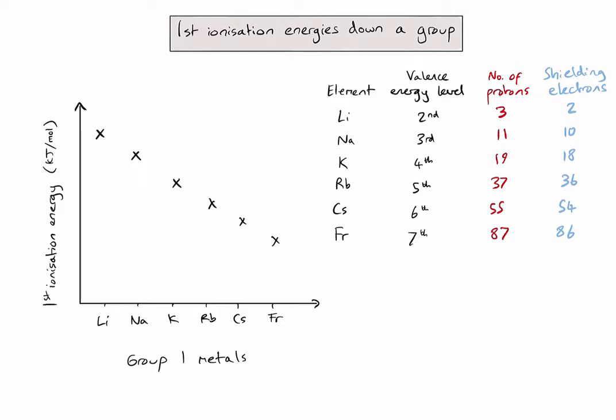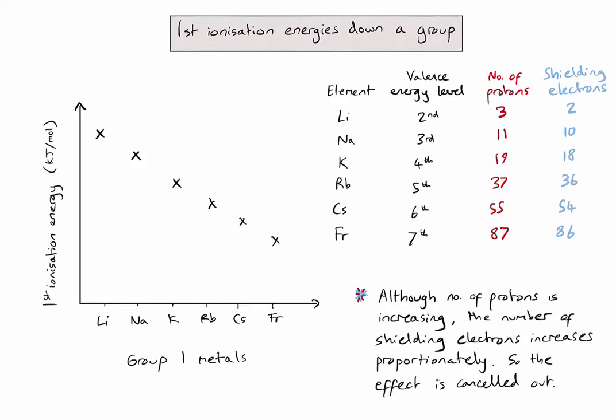So to explain the first ionisation energy decreasing down a group, we're interested in the distance of the valence electrons from the nucleus. Let's quickly summarise that key point that would be expected in an exam question.